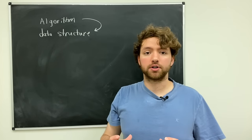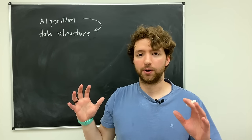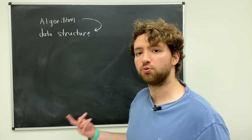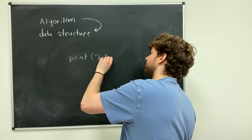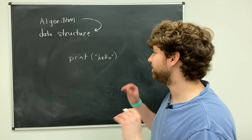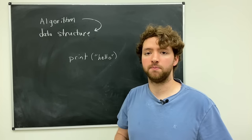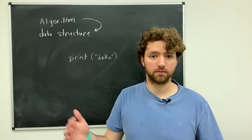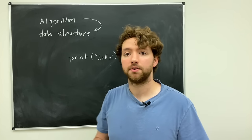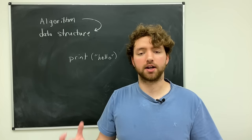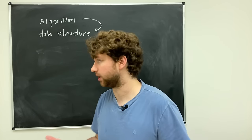We're going to look at algorithms first and then data structures. An algorithm is just a process of doing something. Anytime you write code, even something super simple like printing 'hello' — the smallest line of code you could write — you could consider that an algorithm. More than likely though, the code you write is going to be numerous lines. Think of an algorithm as just a section of code that does something. Often this code will be put inside a function.